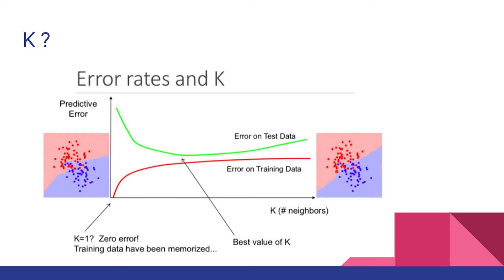This graph summarizes this concept. As you increase the value of K, the error on the test set starts to decrease and then starts to increase again. But for the training set, error increases. The value of K where error on the test set is minimum is the optimum value of K.